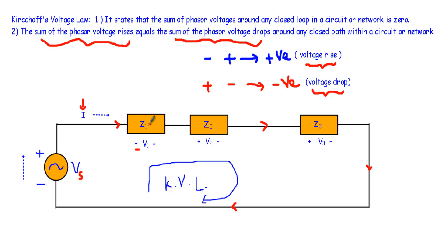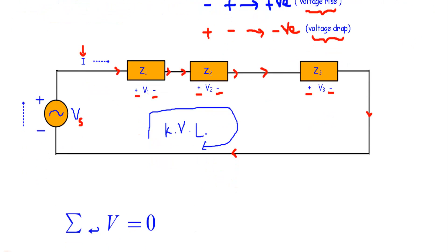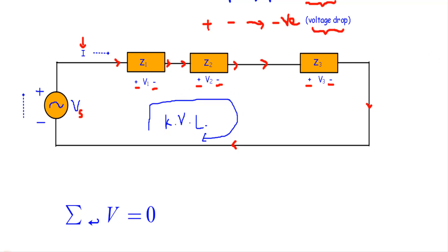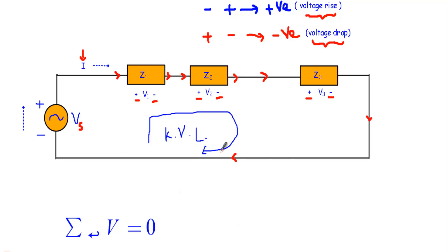The voltage absorbed by impedance Z1 is V1, by Z2 is V2, and across Z3 is V3. Current enters Z1 from one side making that side positive, and leaves from the other side which is negative. Similarly for Z2 and Z3. Now if I apply KVL in this circuit rotating in the clockwise direction, encountering the positive terminal first means the voltage sign is negative (absorption), and negative terminal first means the sign is positive (voltage rise).